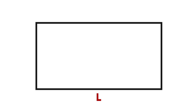So let's start from a rectangle. Let's say it has a length of L and a width of W. One of the things about rectangles is that they have all right angles, so we can notate that here.